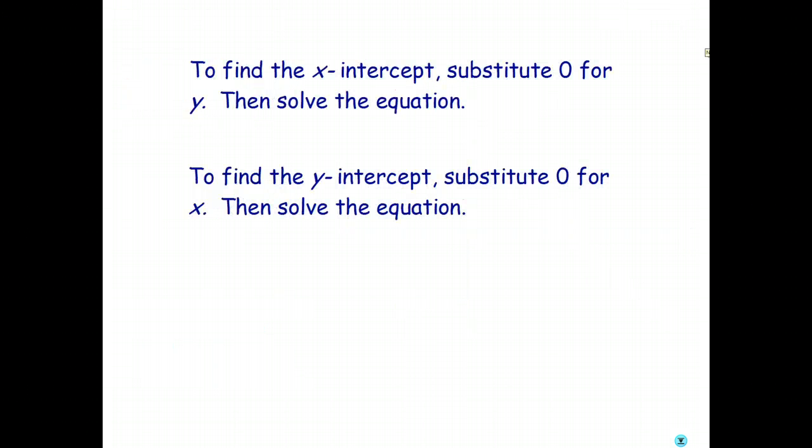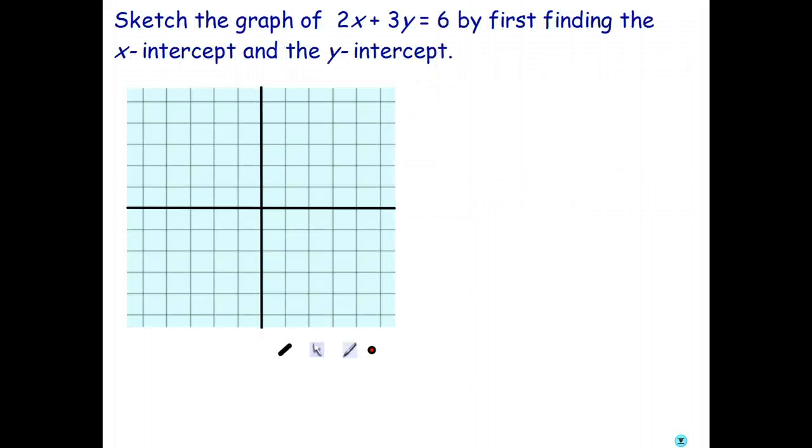So to summarize, here's what we're going to do. To find the x-intercept, we substitute zero for y and solve the equation. To find the y-intercept, we substitute zero for x and solve the equation. So let's go ahead and do one and you'll see how easy it actually is.